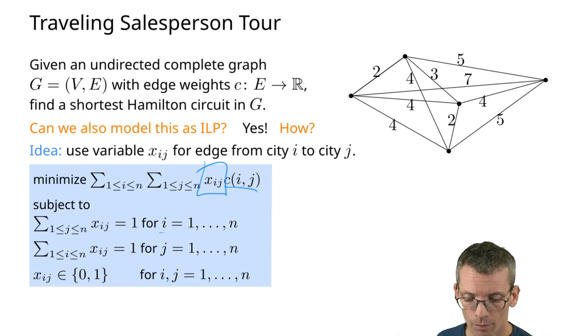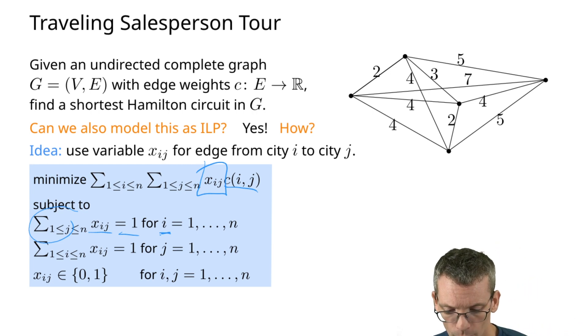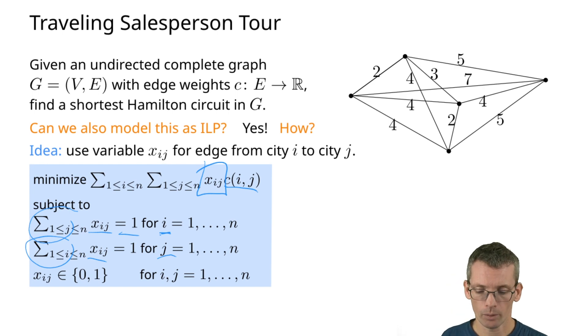And then I will want to have at least the following constraints. For any fixed i, if I am in city i, the next city should be exactly one city. So summing up for a given i over all j, x_ij should be 1. Also from the perspective of a city j, j should be the next city only for one city. So also for a fixed j, the sum over all i, x_ij should be 1.